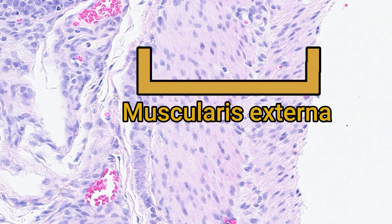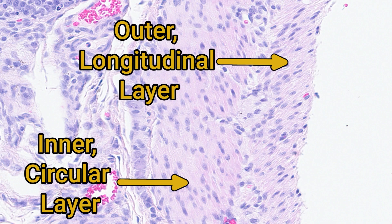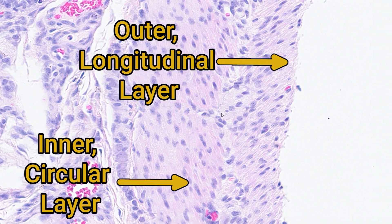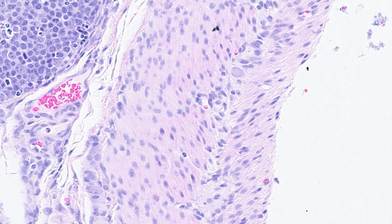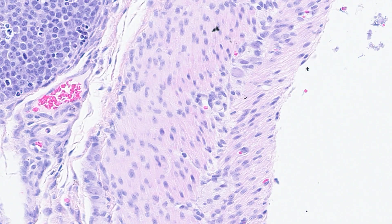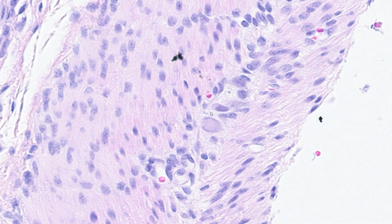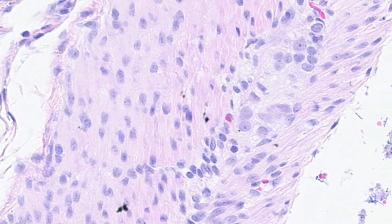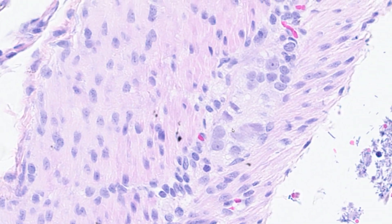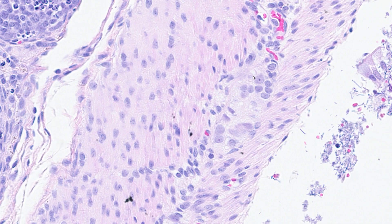Finally, there are the external muscular layers, which were covered thoroughly in the stomach histology video. One additional point: within the connective tissue between the two muscle layers, you'll often find ganglia and aggregates of neurons. These neurons are responsible for controlling peristalsis and are known as the myenteric plexus.